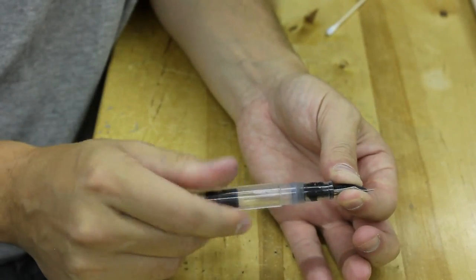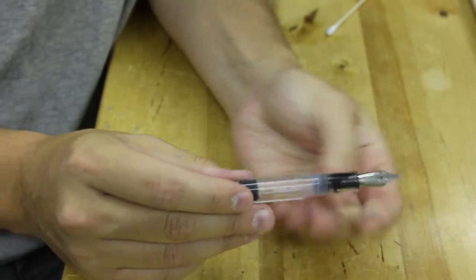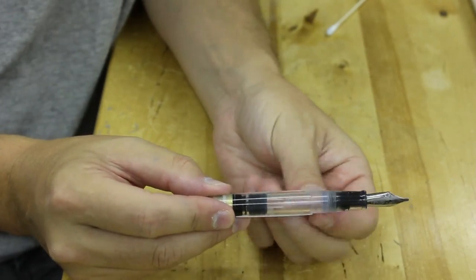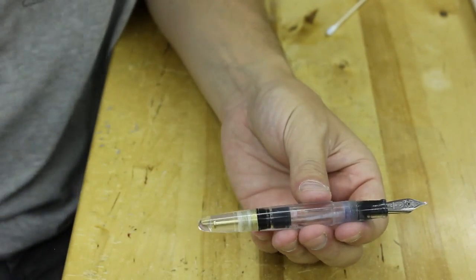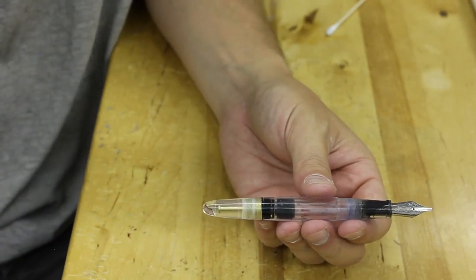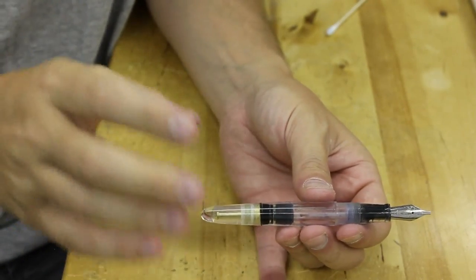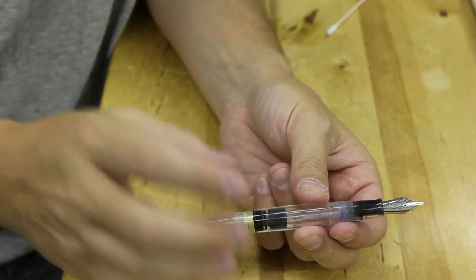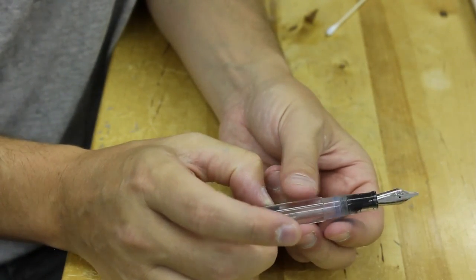Now, some people might be asking, well, Brian, long term, you've got a latex diaphragm in here. What am I going to do? Let's say 30 years from now, that latex diaphragm is starting to deteriorate. A lot of the original pens like the Vacuumatics, of course, over decades and decades, you may need to replace this diaphragm.